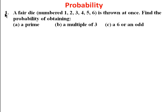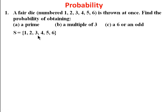Welcome to this tutorial. We are going to take on probability. Our first problem: a fair die numbered one, two, three, four, five, six is thrown at once. Find the probability of obtaining: (a) a prime, (b) a multiple of three, (c) a six or an odd. Our sample space here is one to six — set S is {1, 2, 3, 4, 5, 6} and n(S) = 6.